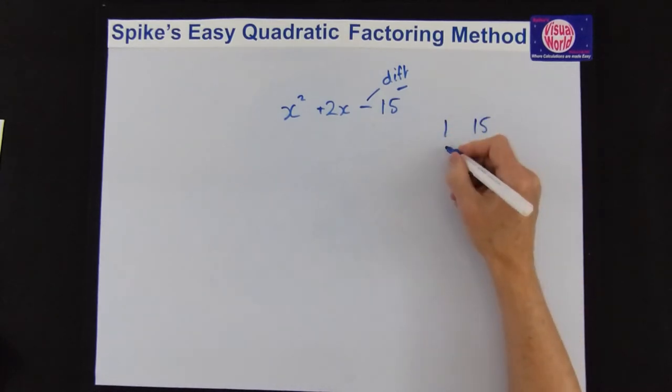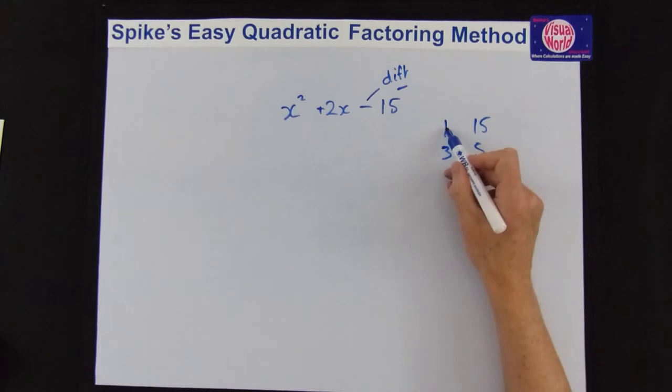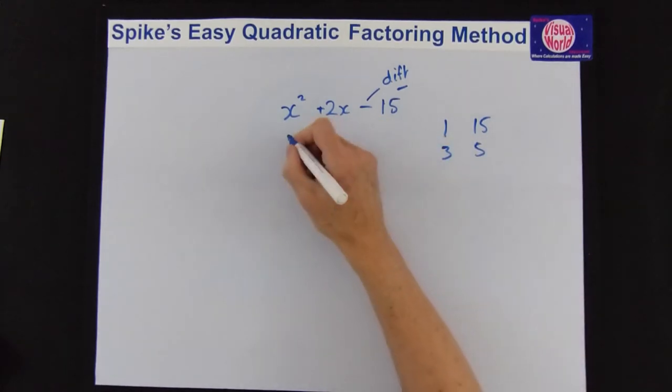3, and 5, and then it's a difference, so we're taking away. So 15 take away 1 gives you 14, so that's not 2. 5 take away 3 gives you 2, so that means we can put in our factors.